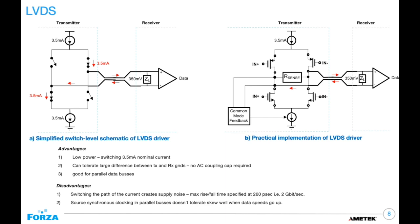Some disadvantages of LVDS: the switching path of current creates supply noise, so it can only work up to a certain speed — theoretically up to 2 gigabits per second. Since there's source synchronous clocking in the parallel buses, it doesn't tolerate skew very well when data speeds go up. In our portfolio, the fastest speed using this interface is about 900 megabits per second. Anything faster than that, we've switched over to the next interface, which is CML.